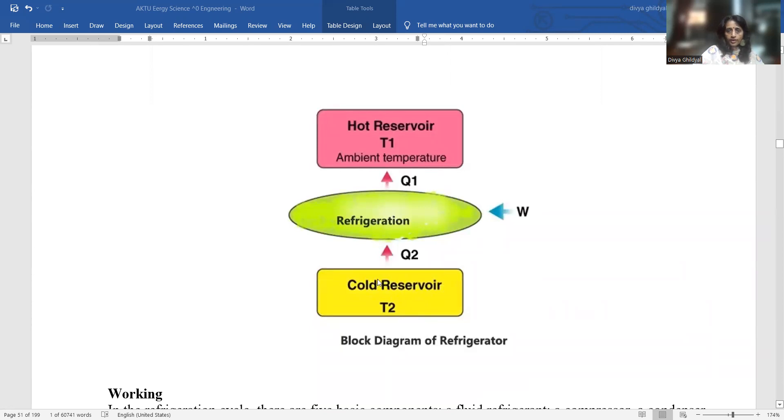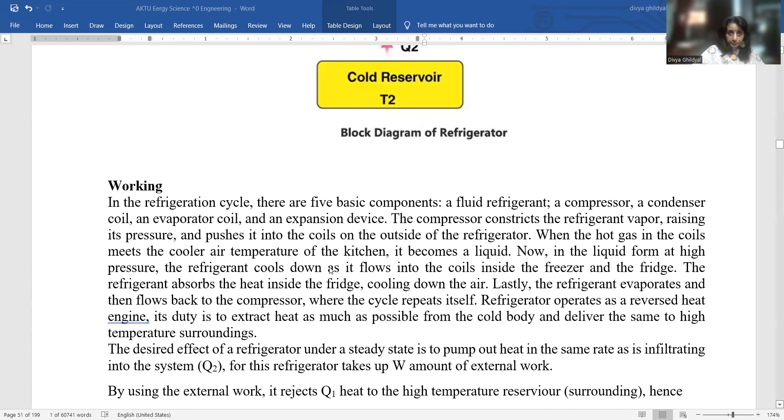Look at this diagram here. From the cold reservoir, heat is getting extracted by the refrigerator and going to the hot reservoir. This way, my refrigerator is cooling whatever is kept inside it. In the refrigeration cycle, there are five basic components: a fluid refrigerator, a compressor, a condenser, an evaporator coil, and an expansion device.